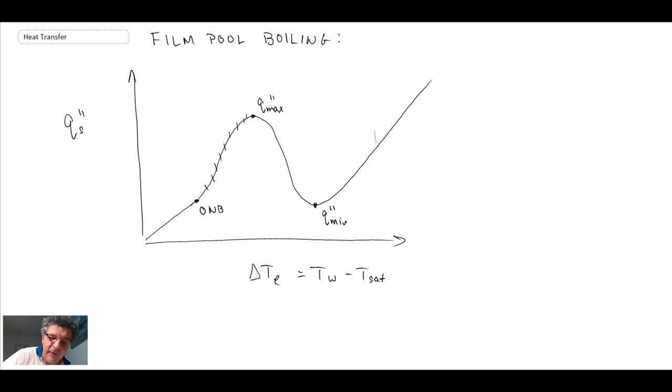What we're going to look at now is what happens in this region here where delta T_e becomes quite large. Remember this is a log scale, so it might not look that large but it is logarithmic, and consequently the delta Ts can be very large. That's why when we get above Q_max, if you're in a power control versus a temperature controlled experiment, you could burn out.